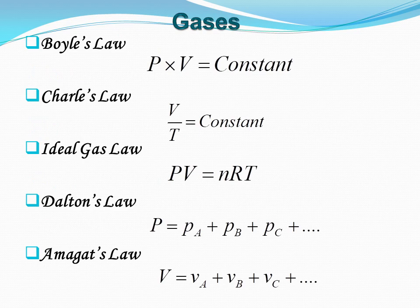Now we understand some laws applicable for the gaseous state. While dealing with substances existing in the gaseous state, the relationship among temperature, pressure, mass, and volume must be known. According to Boyle's law, for a given mass of an ideal gas, the product of the pressure and volume is constant at a constant temperature. That is, P × V = constant.